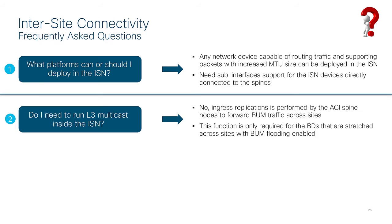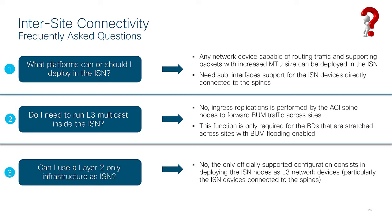Do I need to run layer-3 multicast inside the inter-site network? No — we use ingress replication in case we need to send BUM forwarding traffic across sites. Can I use a layer-2 only infrastructure as inter-site network? The answer is no. The first-layer inter-site network devices directly connecting to the spine need to provide layer-3 routing functionality and define these layer-3 sub-interfaces. Between the local and remote inter-site network devices, I could potentially have a layer-2 infrastructure — like Ethernet or MPLS pseudo-wire, or a VPLS circuit — but the connectivity to the local spine always needs to be layer-3.